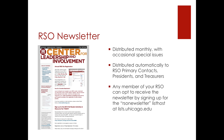Another key resource for your RSO is the RSO newsletter. The RSO newsletter is filled with critical updates on things that your RSO needs to do to stay active, access university opportunities such as the RSO fair, and more. It is distributed monthly with occasional special issues. The RSO newsletter is distributed automatically to all RSO primary contacts, presidents, and treasurers. This is why it is so important to make sure that your contact information is current and updated — otherwise, you might miss out on key updates. Any member of your RSO can opt to receive the newsletter by signing up for the RSO newsletter list host at lists.uchicago.edu.